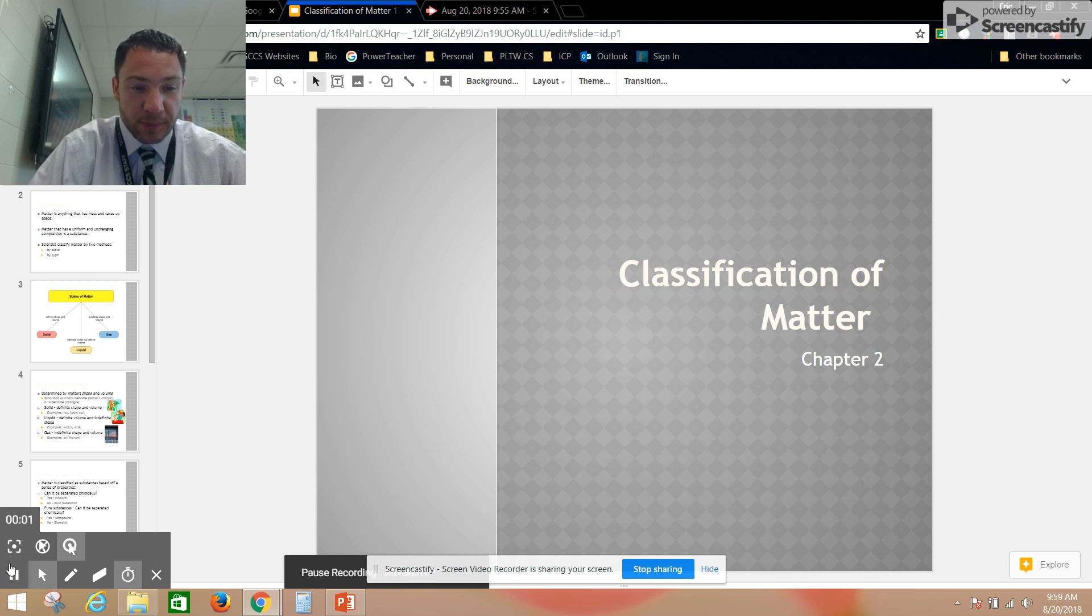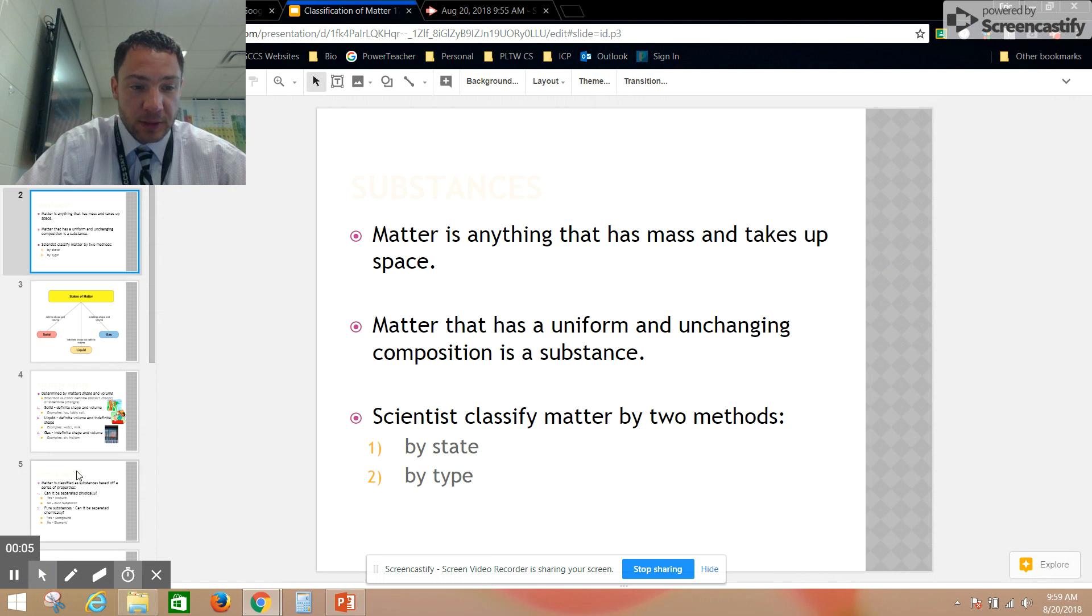This presentation is about how we classify matter. To begin, let's talk about how we define matter. Matter is anything that has mass and takes up space. Everything in the universe is one of two things: either matter or energy. We're going to focus on matter. Any matter that is uniform and has unchanging composition is a substance.